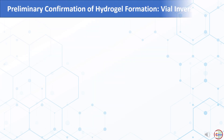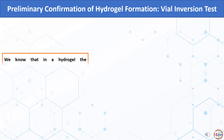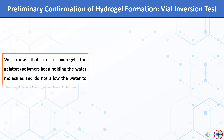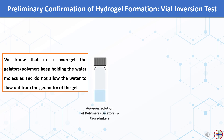We start with preliminary confirmation of hydrogel formation. This is done by the vial inversion test. In a hydrogel, the gelators or polymers keep holding the water molecules and do not allow the water to flow out from the geometry of the gel. In this test, we need to confirm whether polymers can hold water or not in the form of a gel. For this, an aqueous solution of polymers and crosslinker is taken in a glass vial and allowed to form gel under particular conditions.